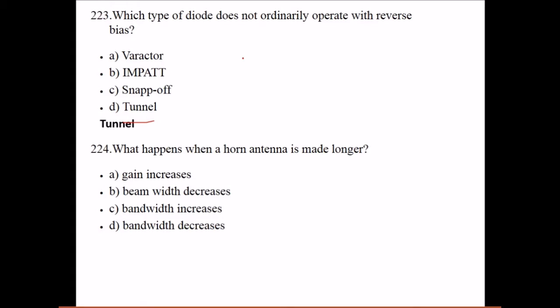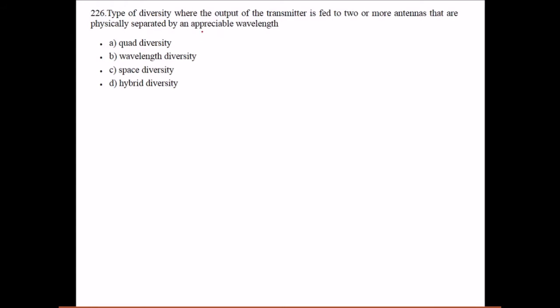What happens when a horn antenna is made longer? Its gain increases. As we make this horn antenna longer, the gain increases. The type of diversity where the output of the transmitter is fed to two or more antennas that are physically separated by an appreciable distance is known as space diversity.